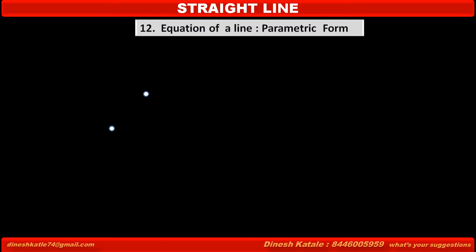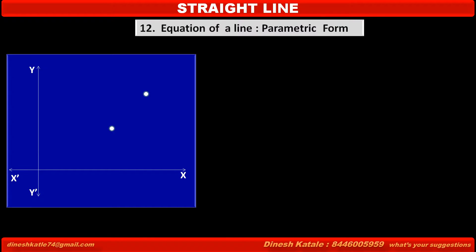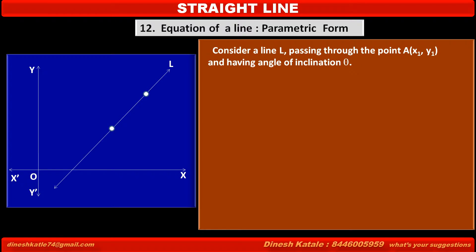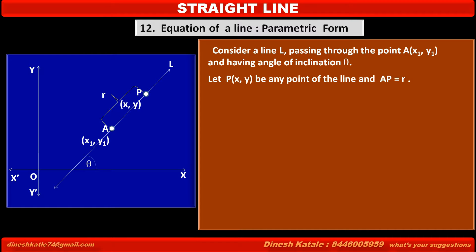Now, we have to form the equation of a line in parametric form. Consider a coordinate system and a line passing through the point A having coordinates (x1, y1) and having angle of inclination theta. Let P with coordinates (x, y) be any point on the line, and let the distance AP equal r.